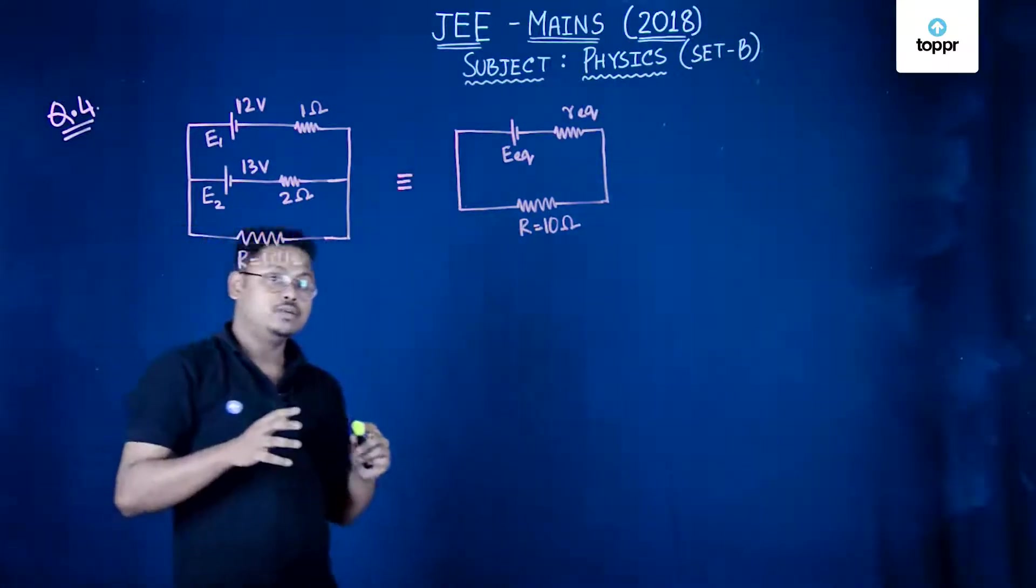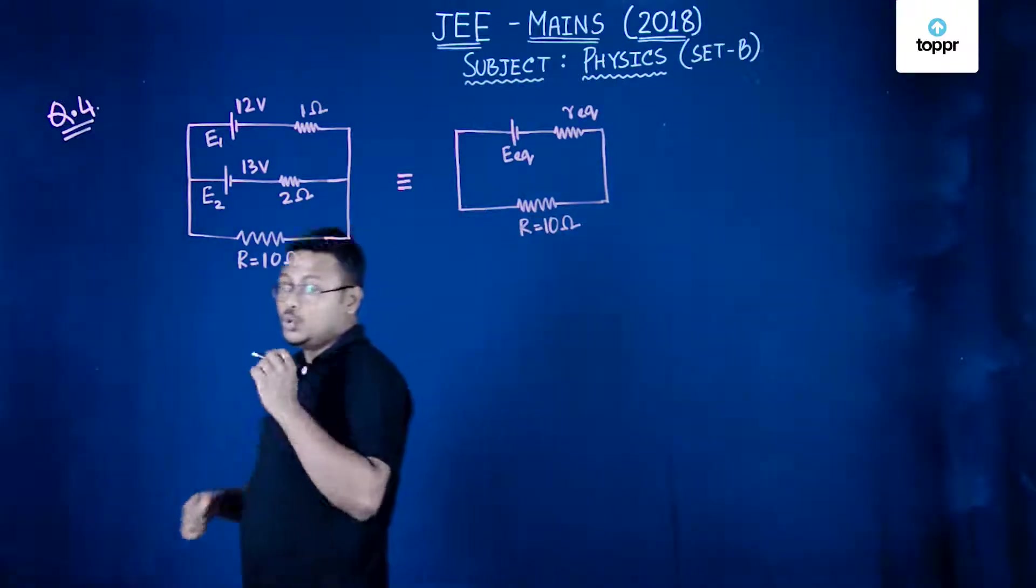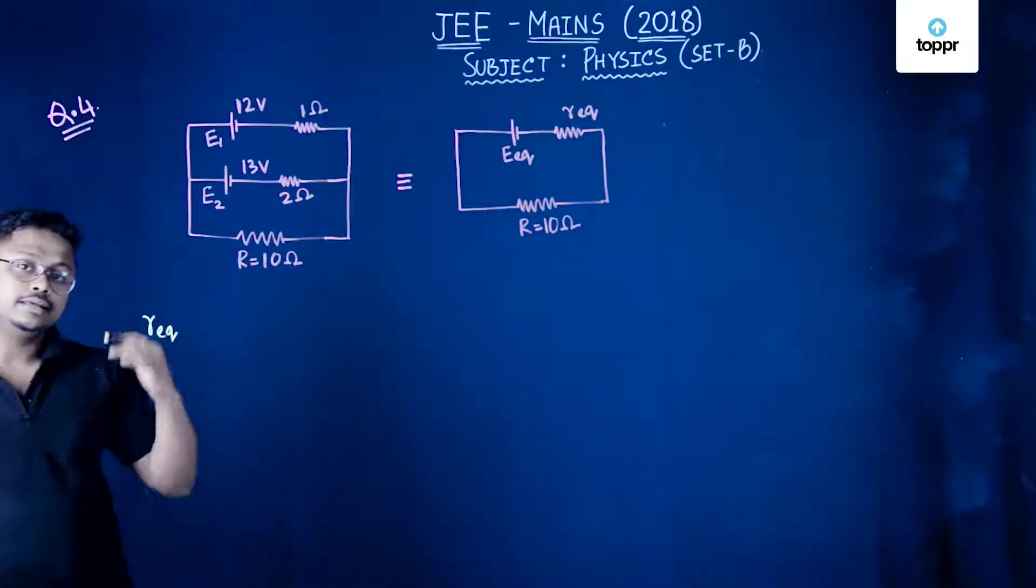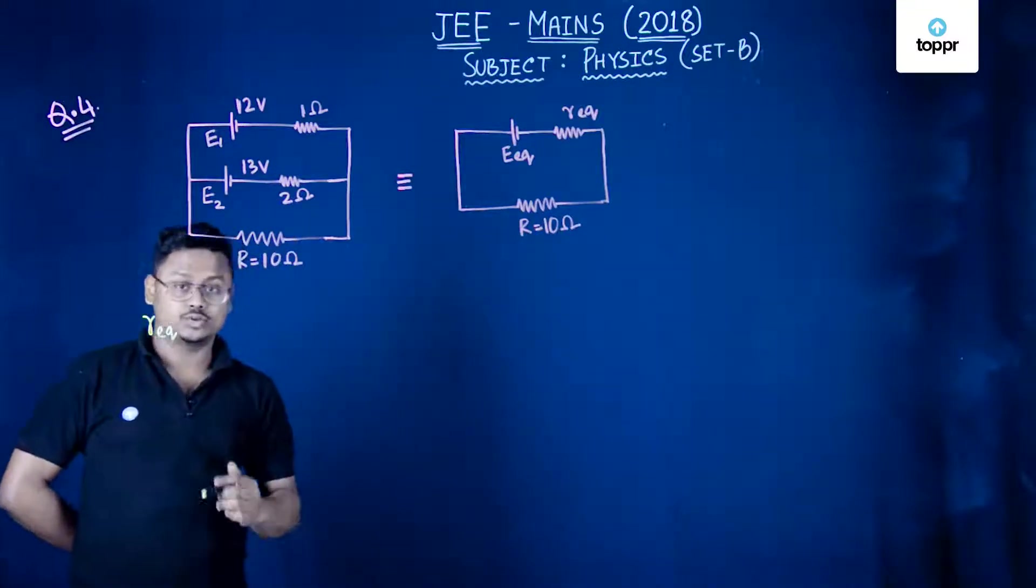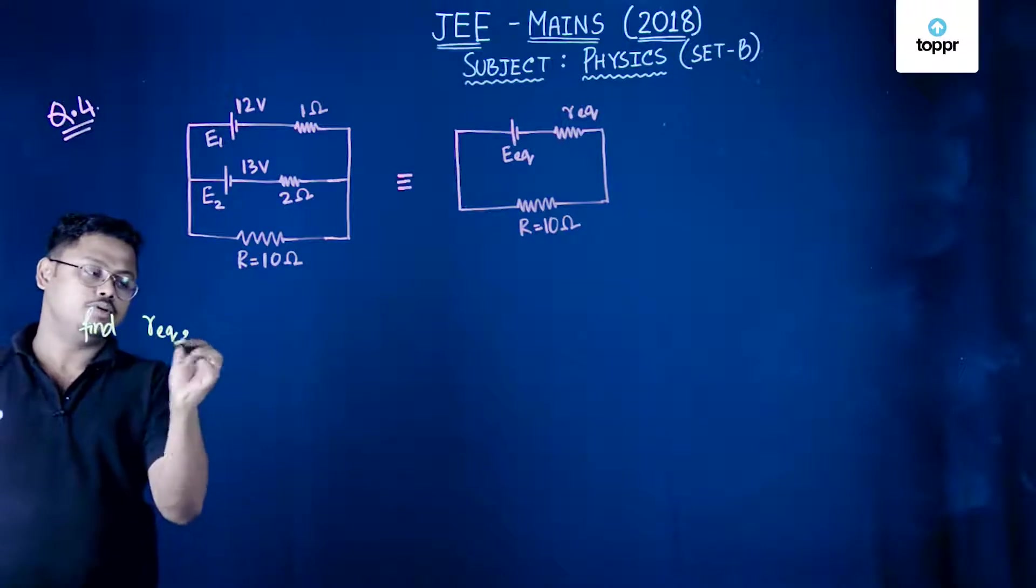We have to find the voltage drop across this R, right? First what we will do is we will find the R equivalent, that is equivalent resistance corresponding to internal resistance. The first step will be to find R equivalent.